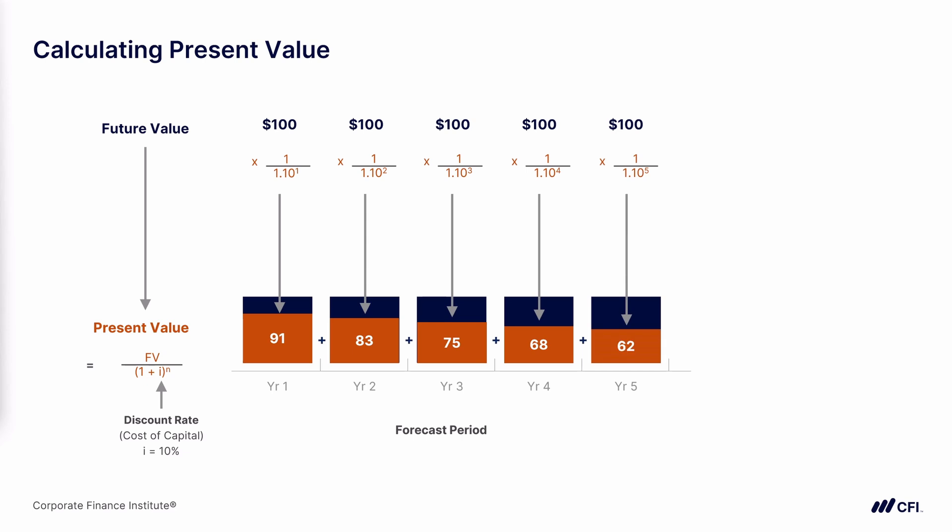Adding up all of these present values, we get a net present value of $379. So if we were going to receive $100 for the next five years, today that would be worth $379 — it would be the equivalent of receiving $379 today.